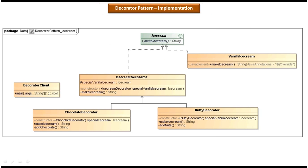This is the class diagram of the scenario we just discussed. At the top you can see the IceCream interface, and it has the MakeIceCream abstract method. This interface is implemented by the VanillaIceCream concrete class, which provides the implementation of the MakeIceCream method. When you call this MakeIceCream method, it will return Vanilla Ice Cream to the caller.